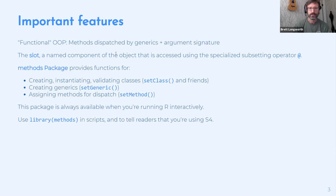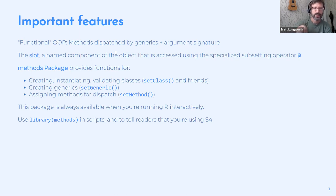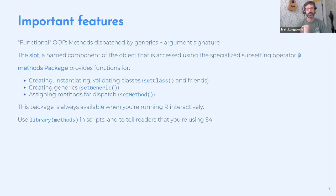S4 introduces the slot, which is a named component of the object accessed using the `@` symbol. As is often the case with OOP in R, this should be hidden behind the scenes and shouldn't be user-facing. The methods package provides all of the S4 functionality — it's loaded by default in an interactive session, but it's good practice to call `library(methods)` explicitly in scripts or packages.